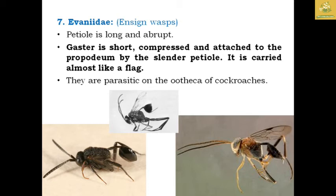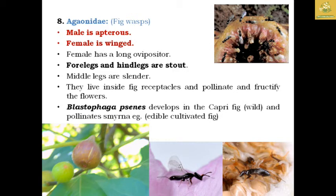The family Agaonidae are known as fig wasps. The male is apterous (wingless) and the female is winged. The female has a long ovipositor. The forewings and hind wings are stout, and the middle legs are slender. They live inside fig plants, pollinating and fructifying the flowers. Blastophaga, developed from the capric fig (wild fig), pollinates Smyrna figs, which are the edible cultivated fig.